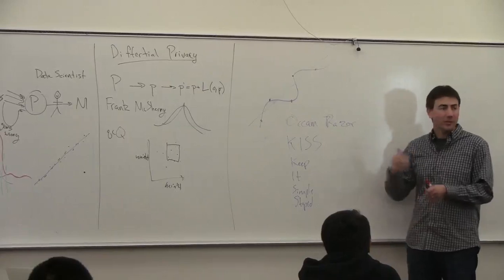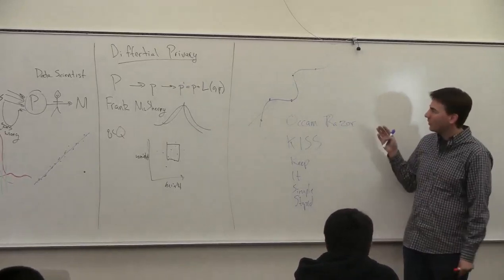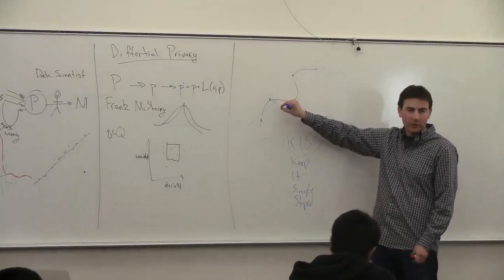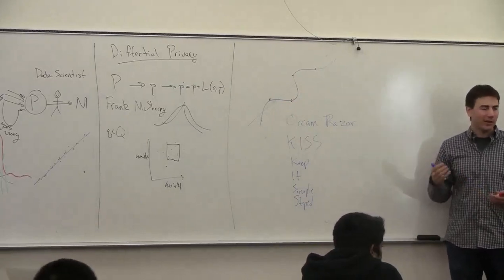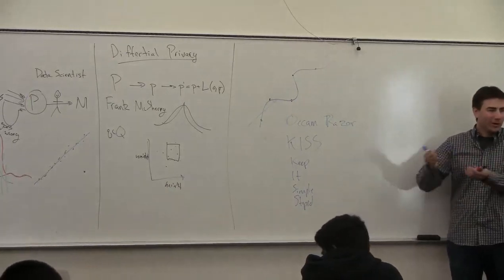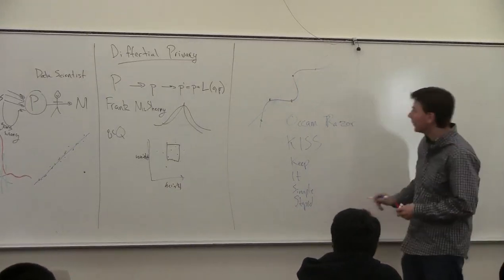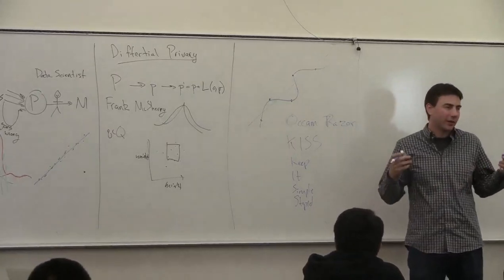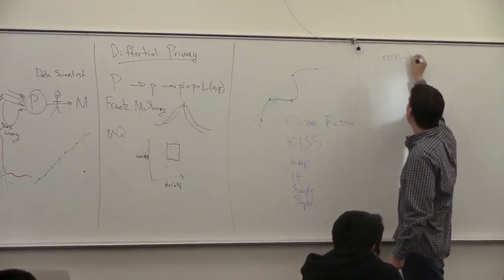But sometimes, especially with really large data sets, you want a more complex model — there is something more complex going on. So how do you trade off a smaller amount of error versus a simpler model? How do you figure out what the right in-between is? There's no right answer or wrong answer.